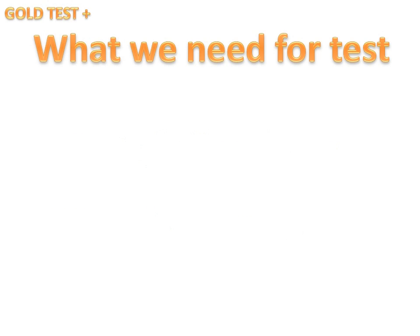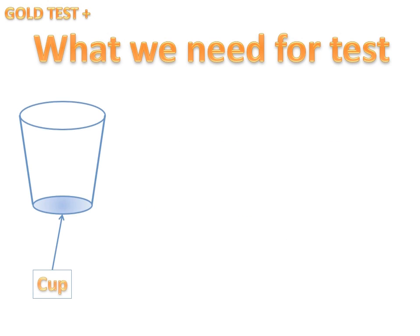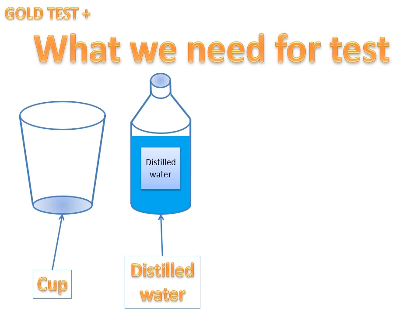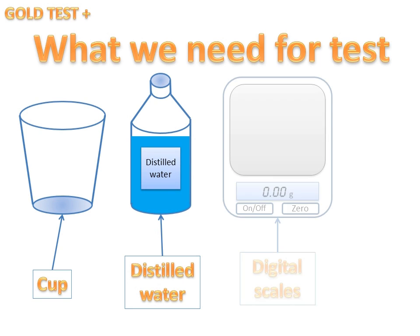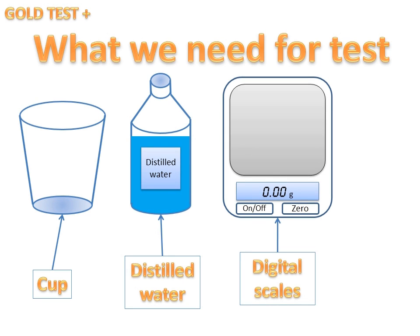Here is what we need for the test: a plastic, low-weight cup; distilled water; scales with a precision of 100th part of a gram — do not use scales with low precision; and of course, the golden item.